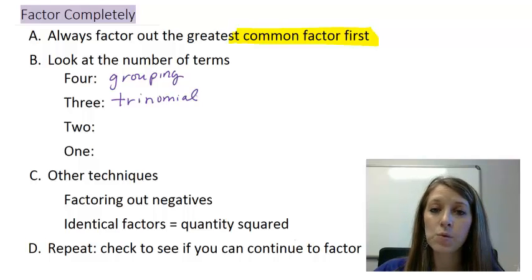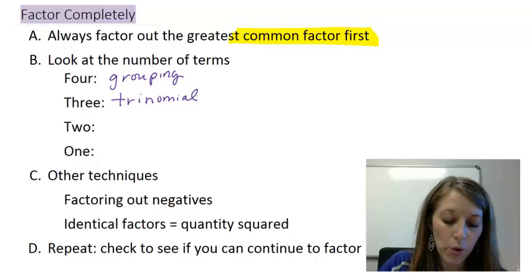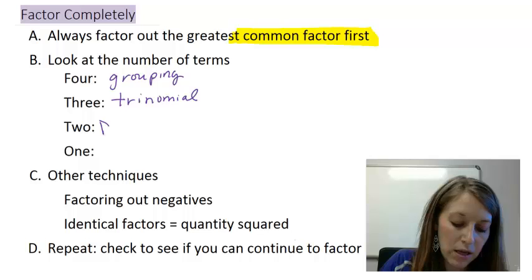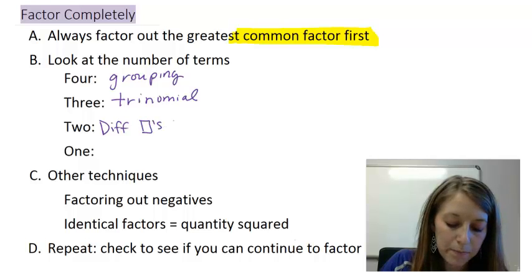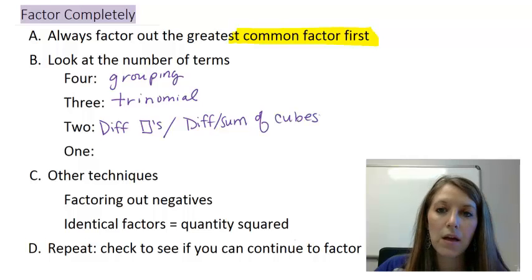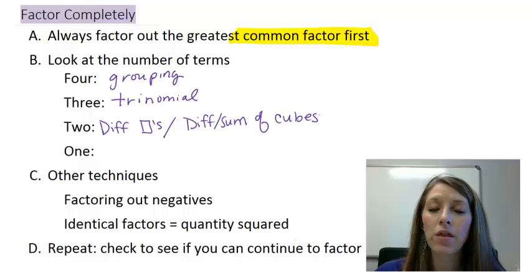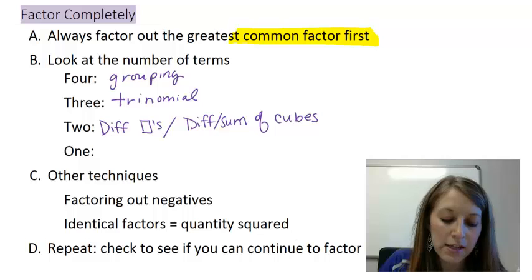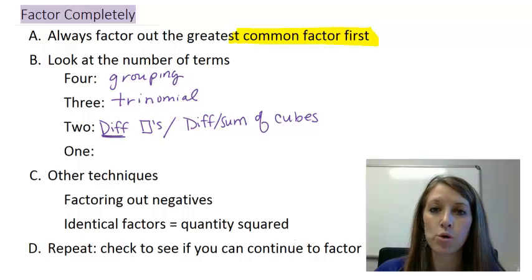If it has two terms we actually have to make a choice here. But it should be a pretty easy choice. The choice is it's got to be either a difference of squares or it's got to be a sum or difference of cubes. So we just have to decide whether it's squares or cubes. And if it's squares we need to make sure that it's a difference or a subtraction.